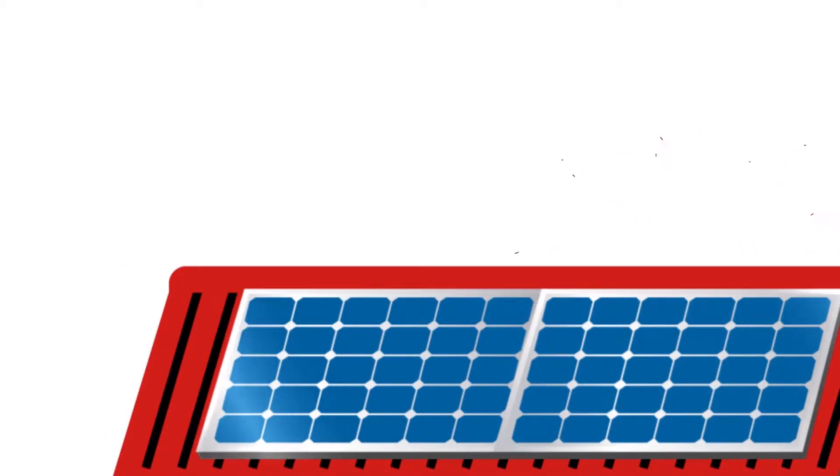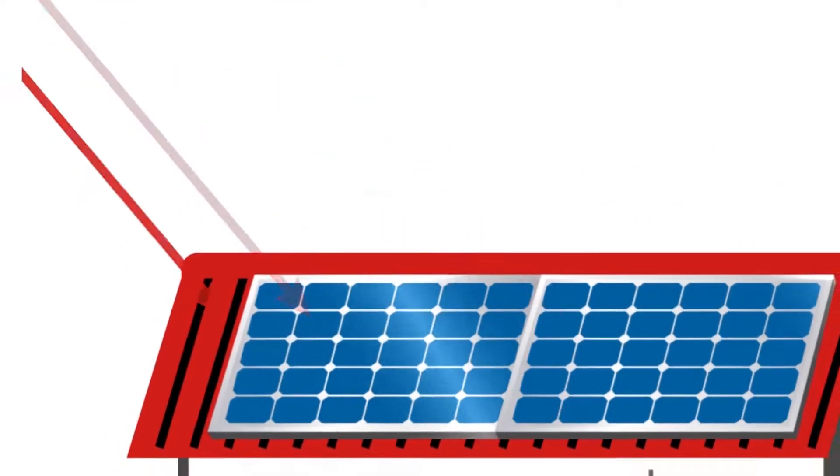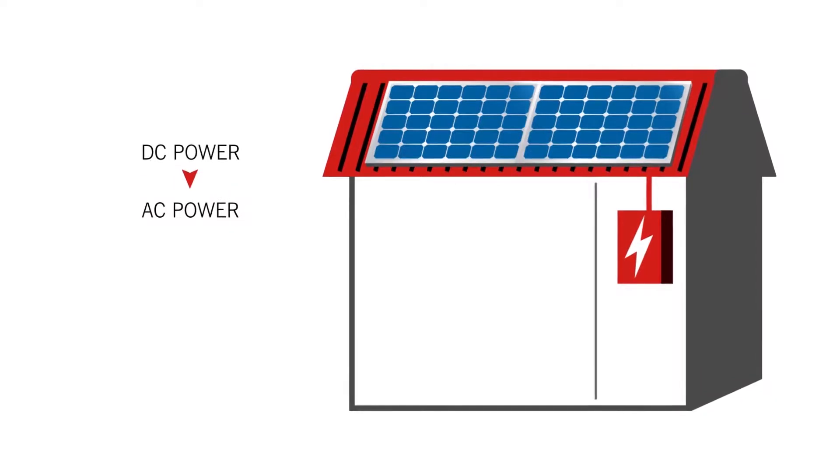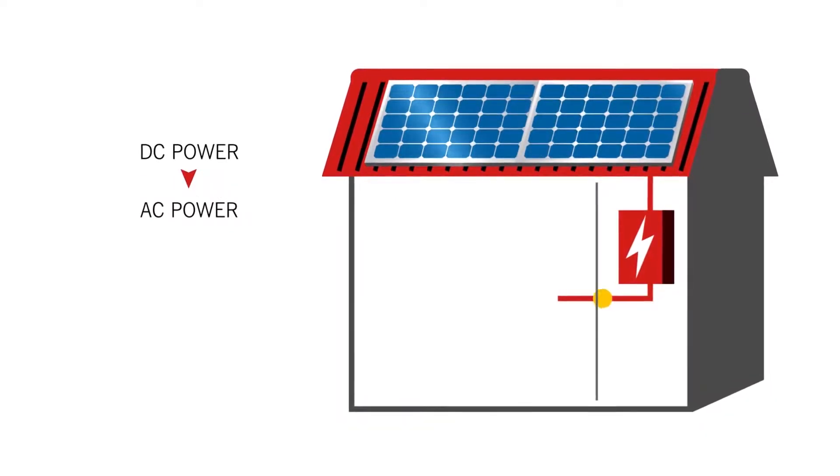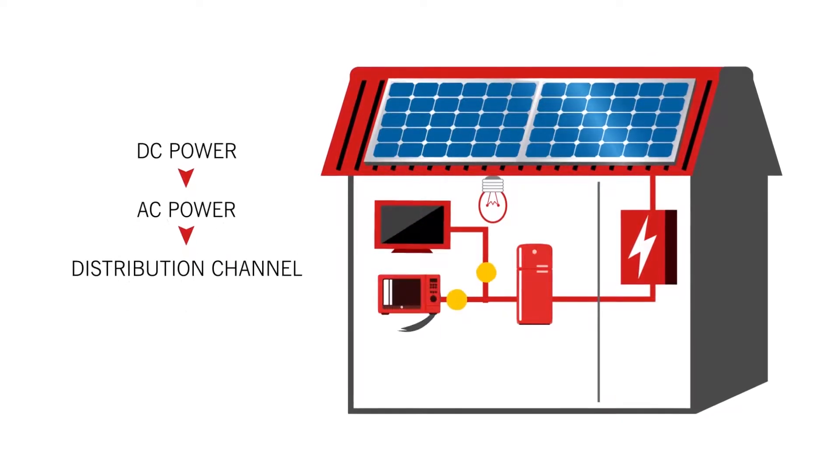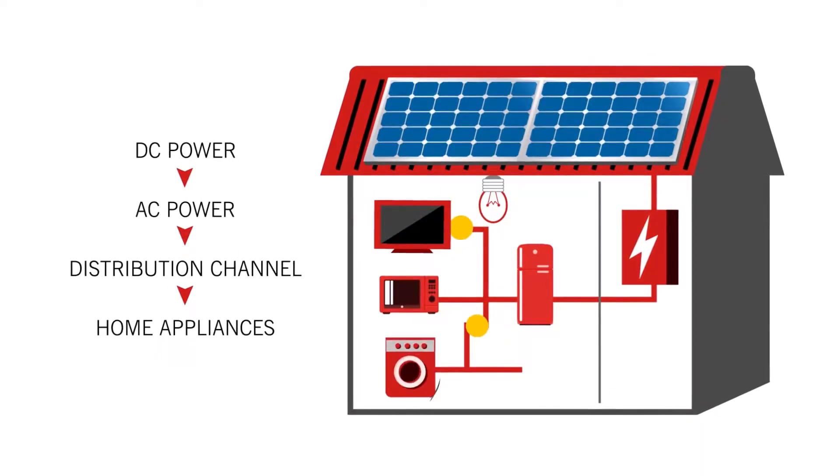First, the solar panel collects the sun's energy. It then generates DC power that is converted into AC power through an inverter. After which, the converted power is directed to a distribution channel, which supplies electricity to the entire home.